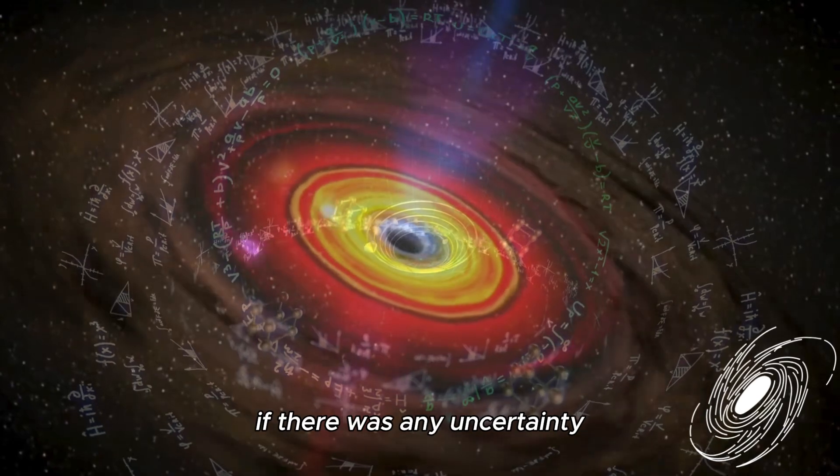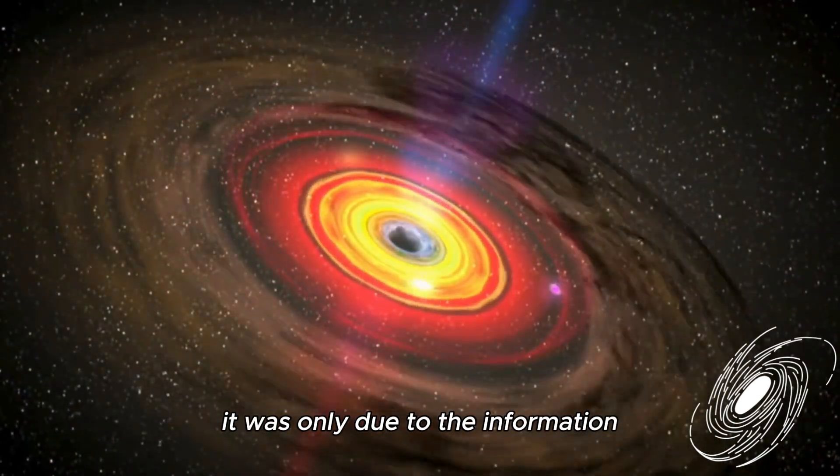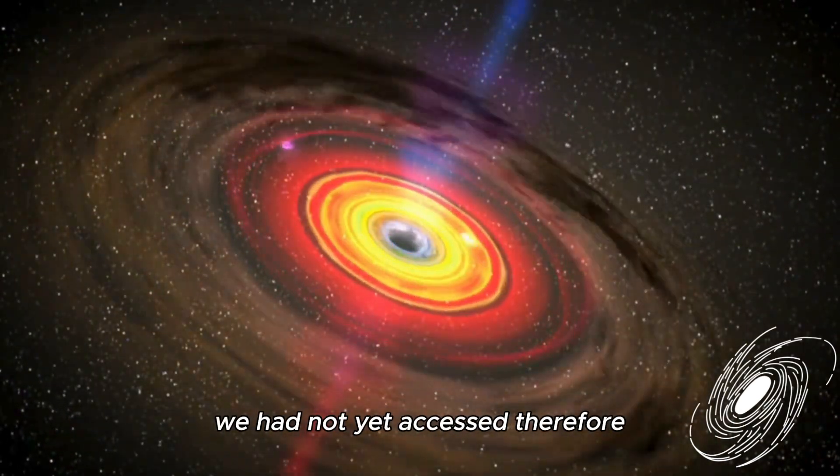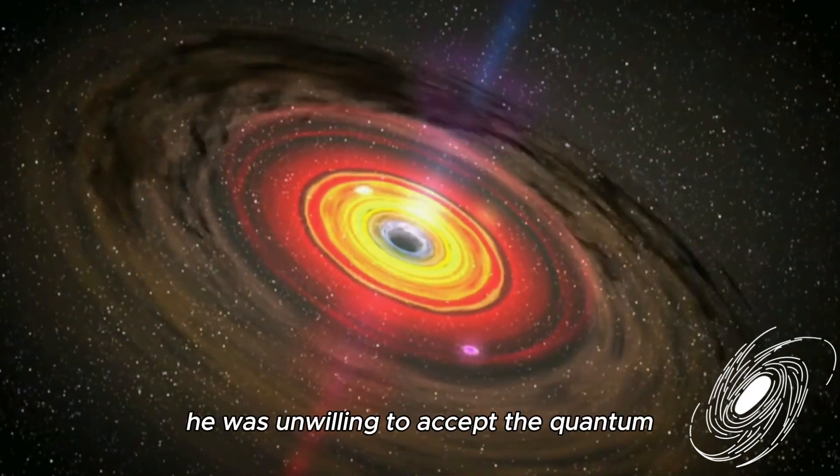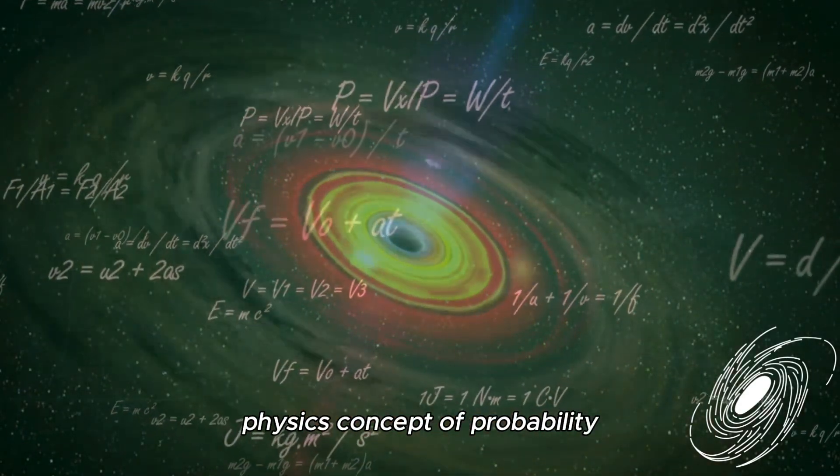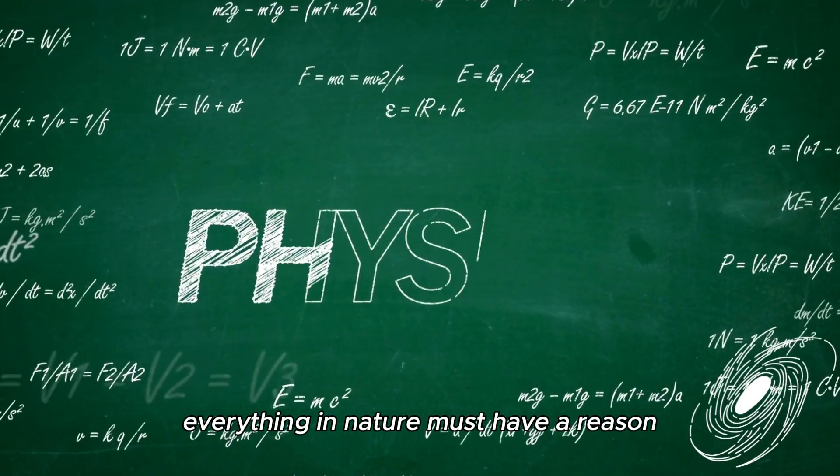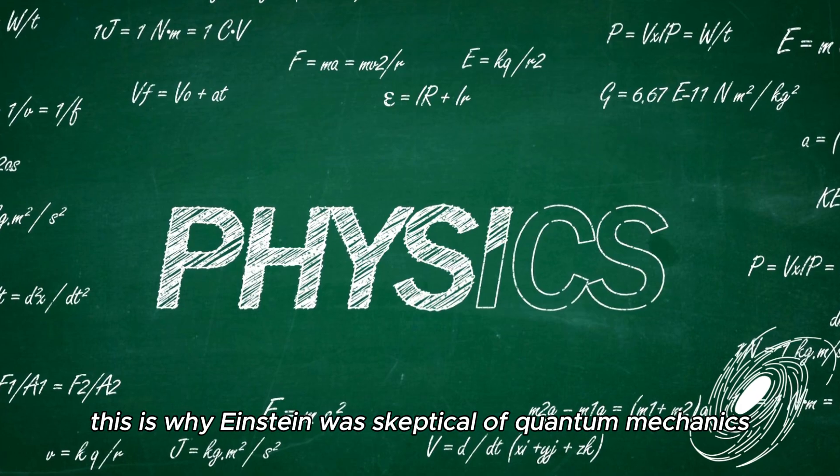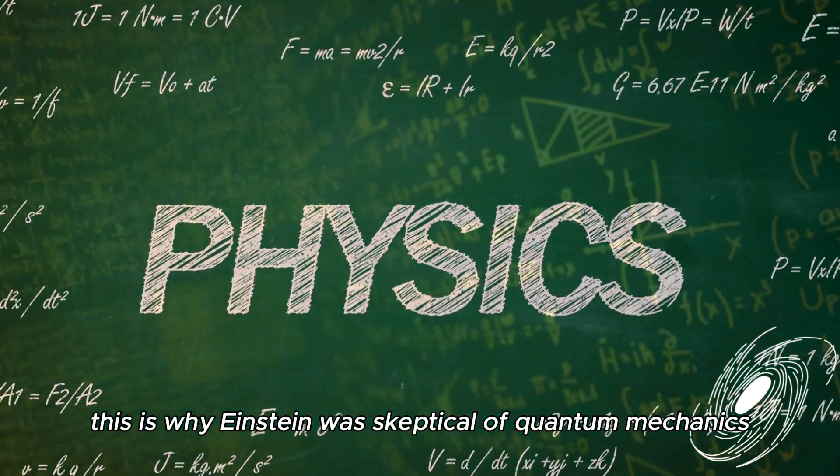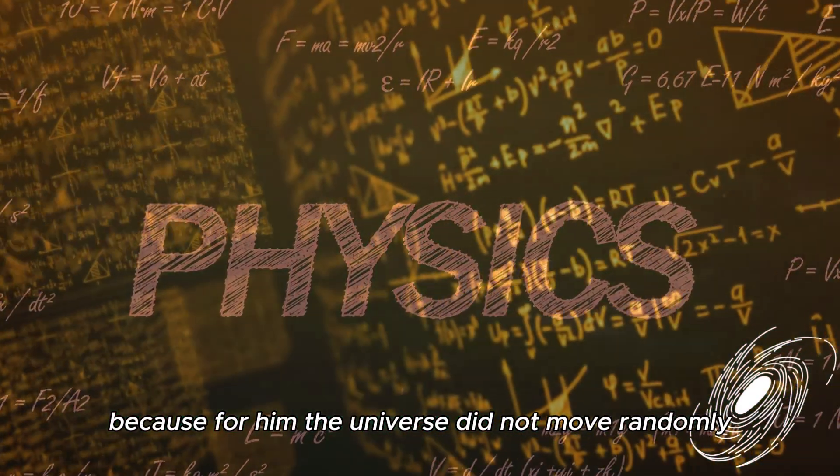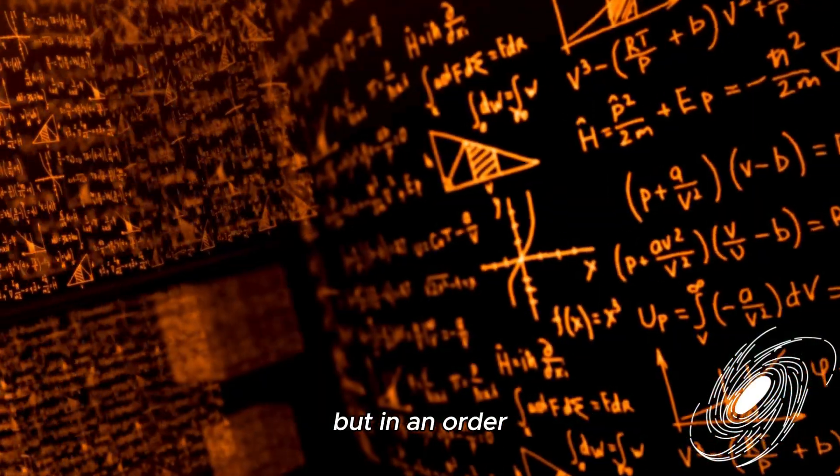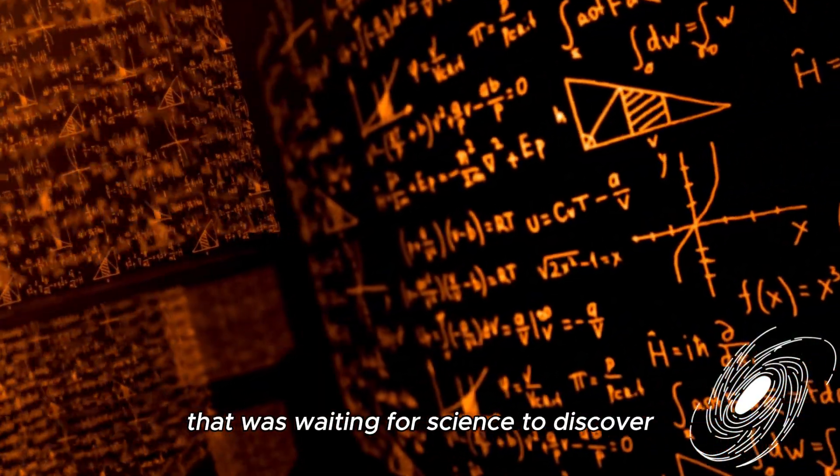If there was any uncertainty, it was only due to the information we had not yet accessed. Therefore, he was unwilling to accept the quantum physics concept of probability as an explanation. Everything in nature must have a reason. This is why Einstein was skeptical of quantum mechanics, because for him the universe did not move randomly, but in an order that was waiting for science to discover.